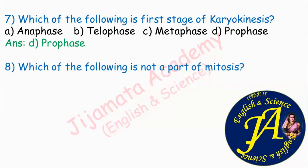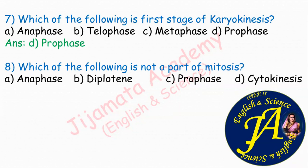Which of the following is not a part of mitosis? Options are anaphase, diplotene, prophase, cytokinesis. Option B, diplotene, is the correct answer. Mitosis occurs in two steps: karyokinesis and cytokinesis. Karyokinesis occurs in four steps — prophase, metaphase, anaphase, telophase — but in meiosis, prophase consists of five sub-steps, and diplotene is one of those steps. Therefore, diplotene is not a part of mitosis.